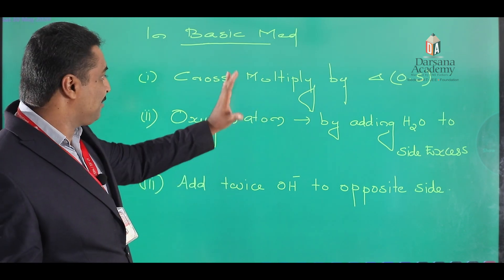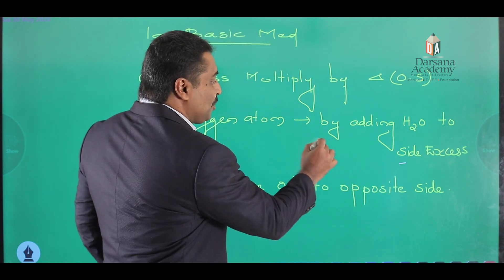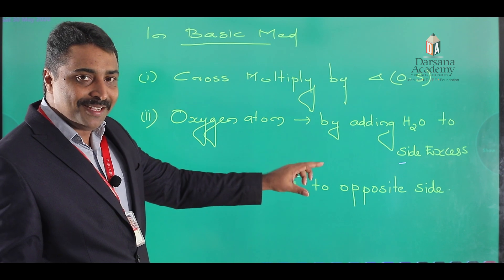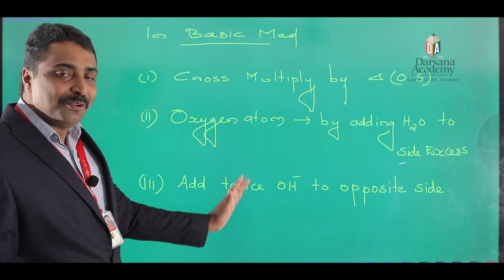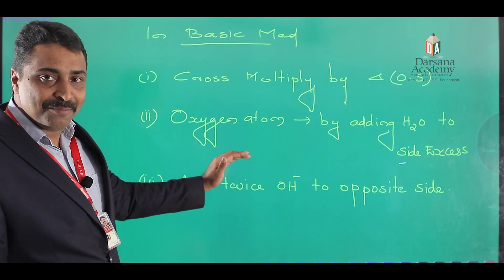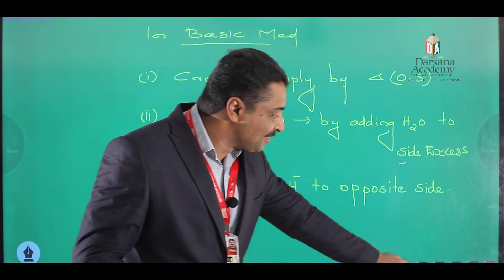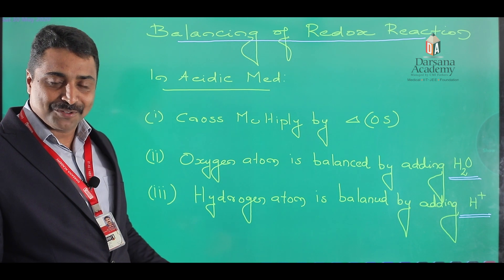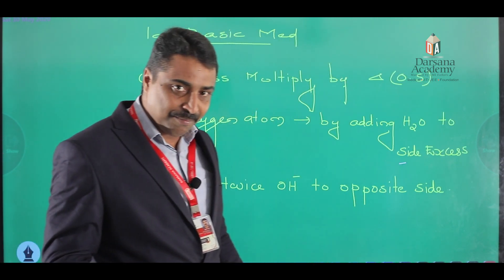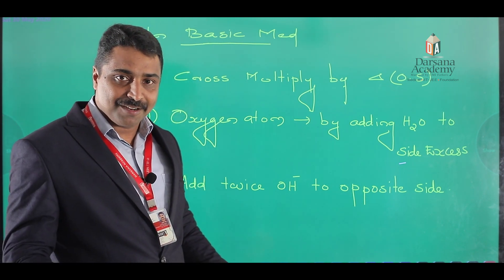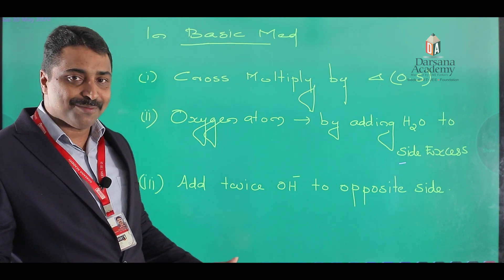Similarly, in basic medium, the first step is the same — cross multiply by the change in oxidation state. For the second step, the oxygen atom is balanced by the addition of water molecules to the side that is excess in oxygen. Then, add twice the OH⁻ ion to the opposite side. That is the key difference to keep in mind for basic medium.